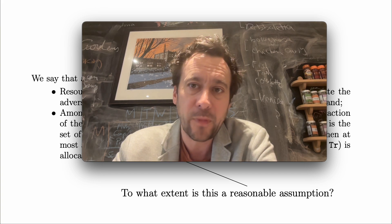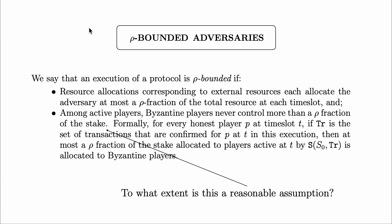...of what it means for the adversary to be row-bounded. Let's recall our earlier definition. We say an execution of a protocol is row-bounded if it satisfies the conditions laid out here. This first bullet point is just related to external resources, so I'm not worried about that. I'm really interested in the aspect of the definition which relates to proof-of-stake. The assumption we made was basically that among active players, Byzantine players never control more than the row fraction of the stake. In some ways this is a funny definition to make because it's really as much a condition on the protocol as it is on the transactions issued by the environment.